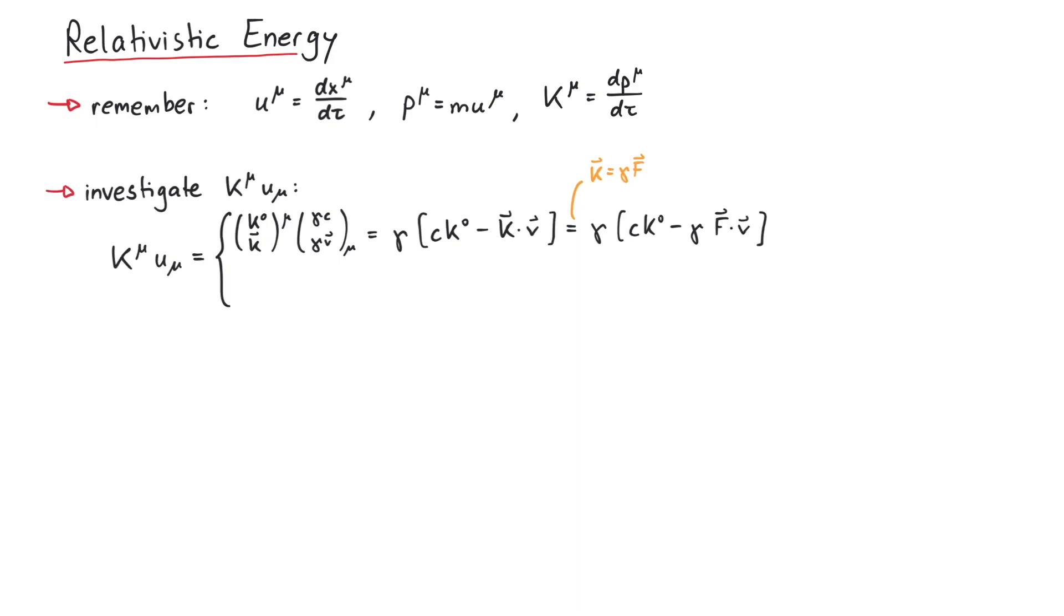On the other hand, the 4-force k mu is equal to mass times b mu, the 4-acceleration, if we assume a time-independent mass. And since 4-acceleration and 4-velocity are always perpendicular to each other, this yields 0.